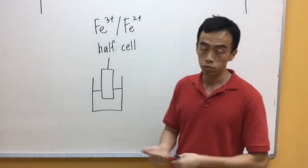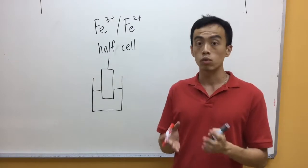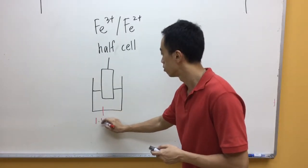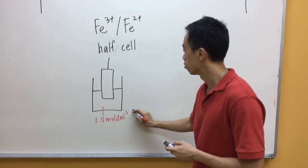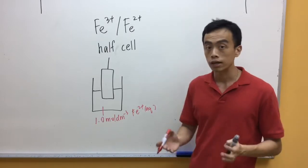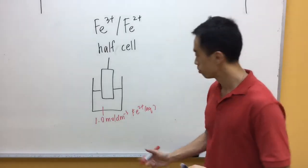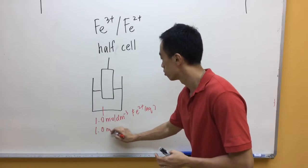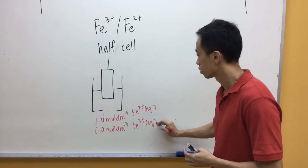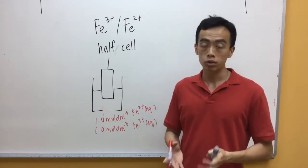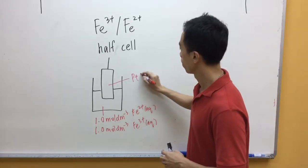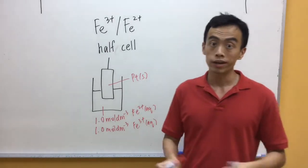In terms of labeling, it's also pretty simple. Again, the concentration of solutions, it must be 1 mol per dm cubed. Concentration of iron-2-plus, it must be 1 mol per dm cubed. Concentration of iron-3-plus will also be 1 mol per dm cubed. Then we have to add in the inert electrode.